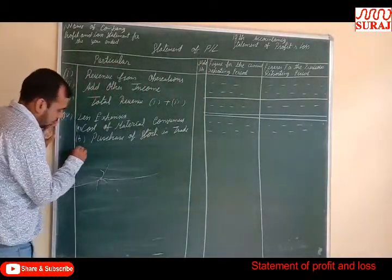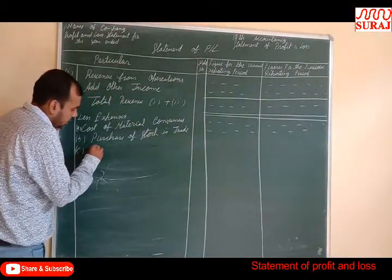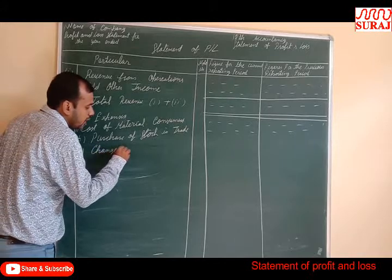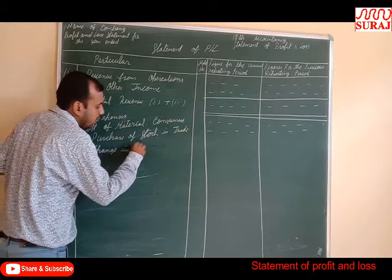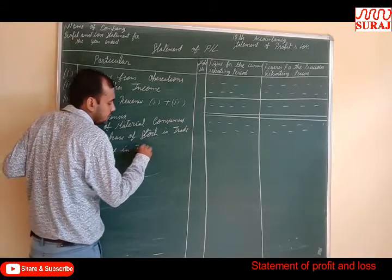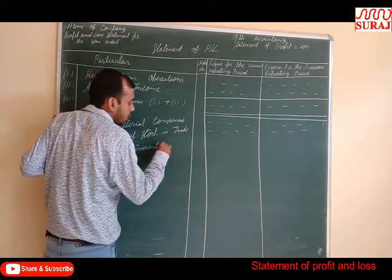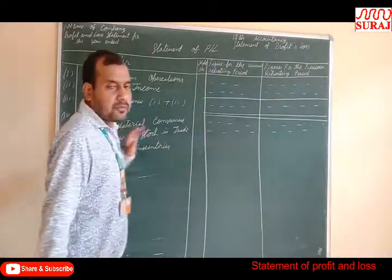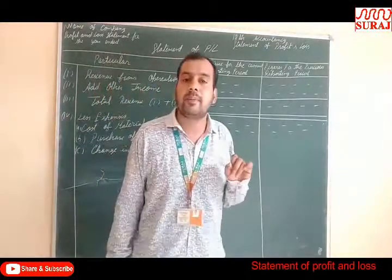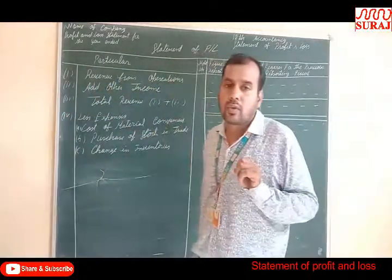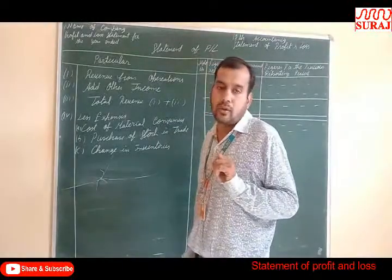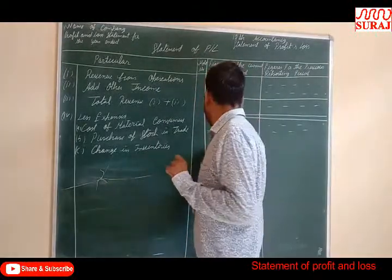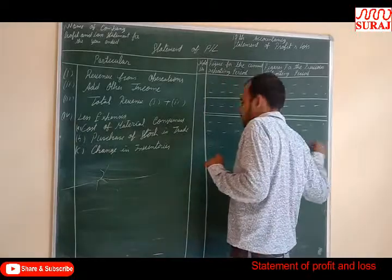Third: Change in Inventory. This covers any finished goods and semi-finished goods — opening stock minus closing stock. That will be included in the Change in Inventory.